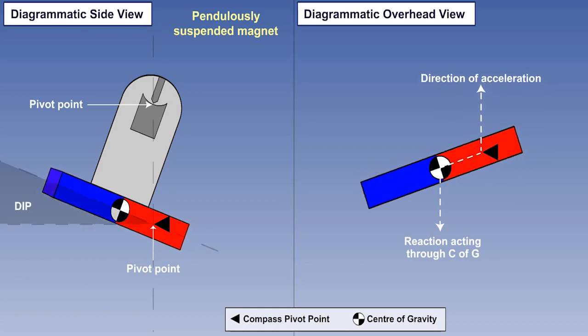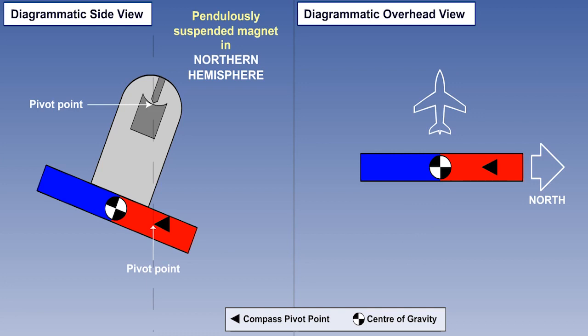As magnetic dip causes the pivot point and the centre of gravity to become misaligned, it follows that where a turning moment can be created by magnetic dip, a turning error will occur. Let's look again then with the help of our diagrams at an acceleration on a heading of due west, or 270 degrees, in the northern hemisphere.